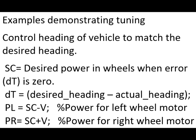In the encoder examples earlier, we wanted the encoder values to match. In the following set of tuning examples, we want the heading of the vehicle to match the desired heading. SC is the desired power to the wheels when the error is minimum. dT is defined as the desired heading minus actual heading. In this build, the power of the left wheel is defined to be SC minus V, and the power in the right wheel is defined to be SC plus V.